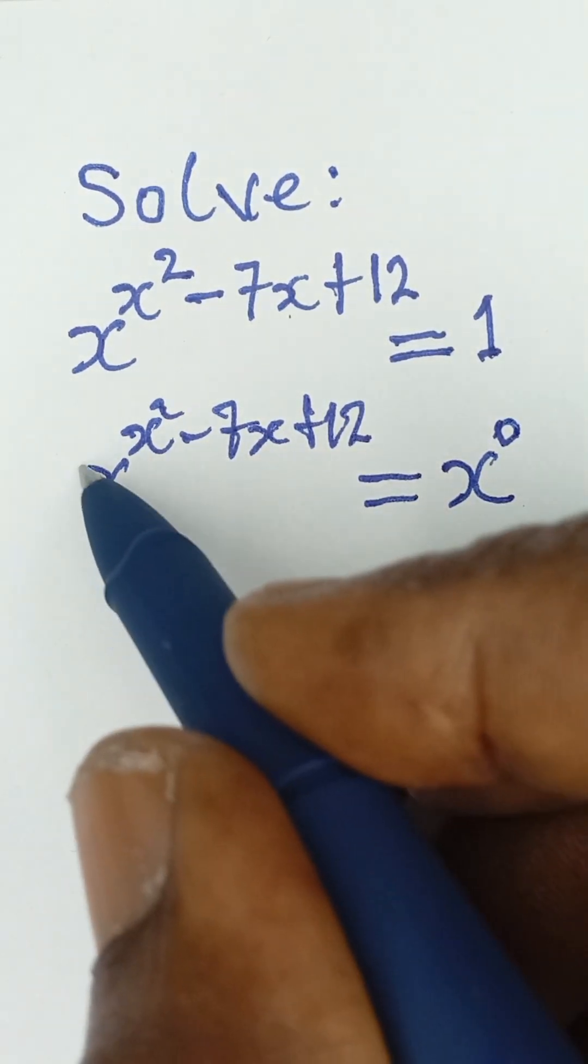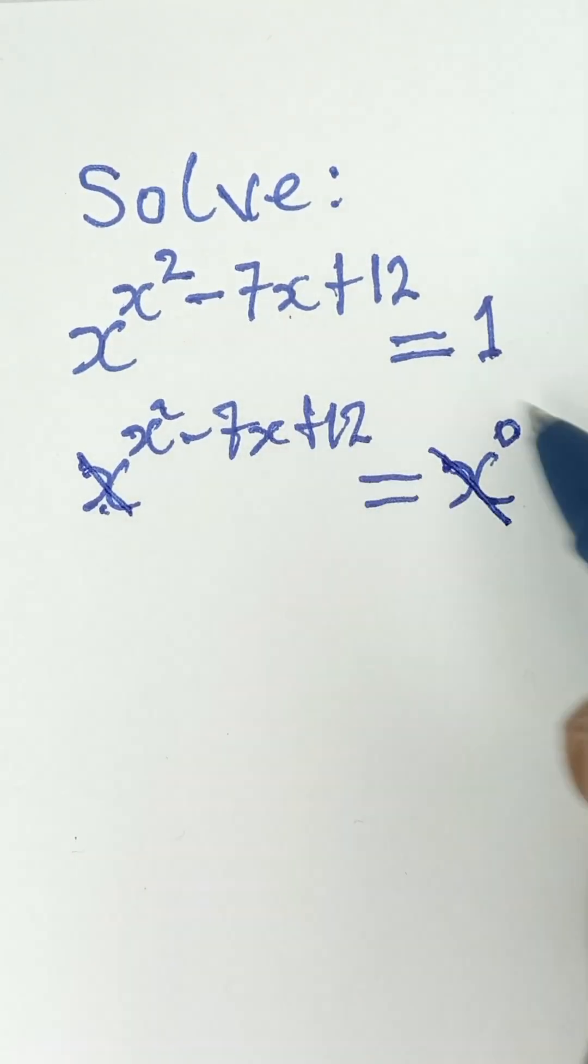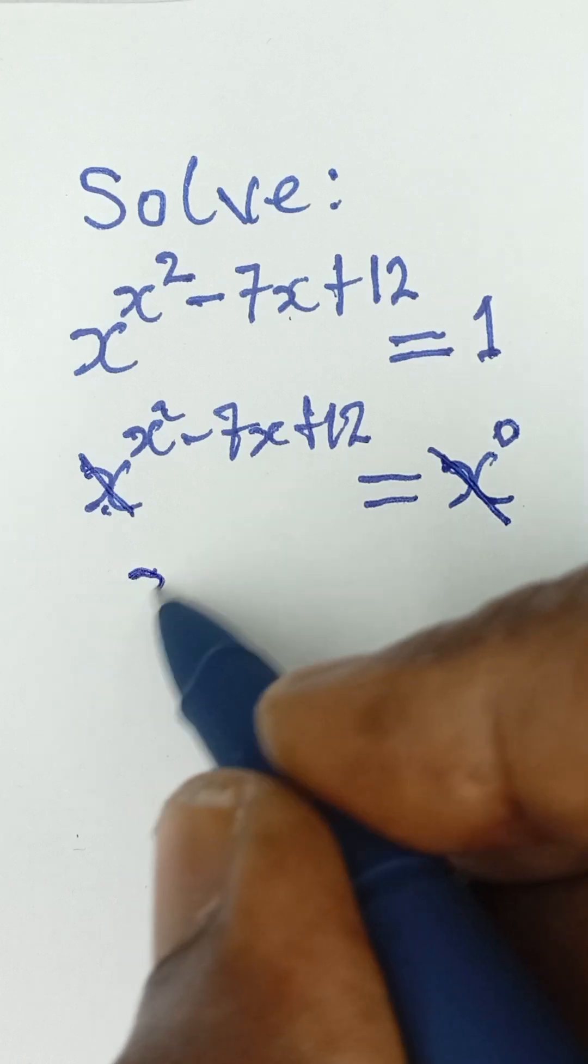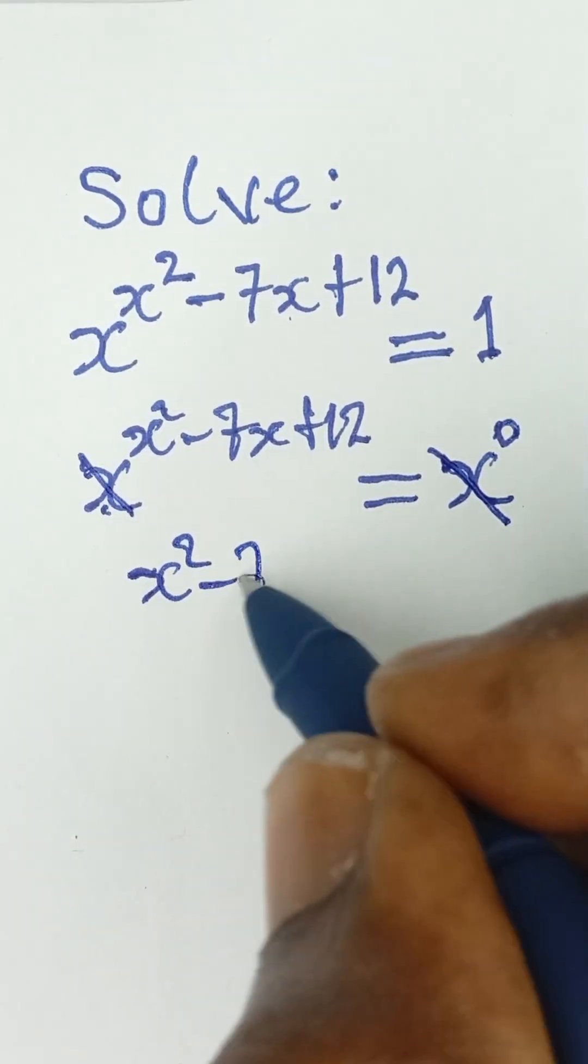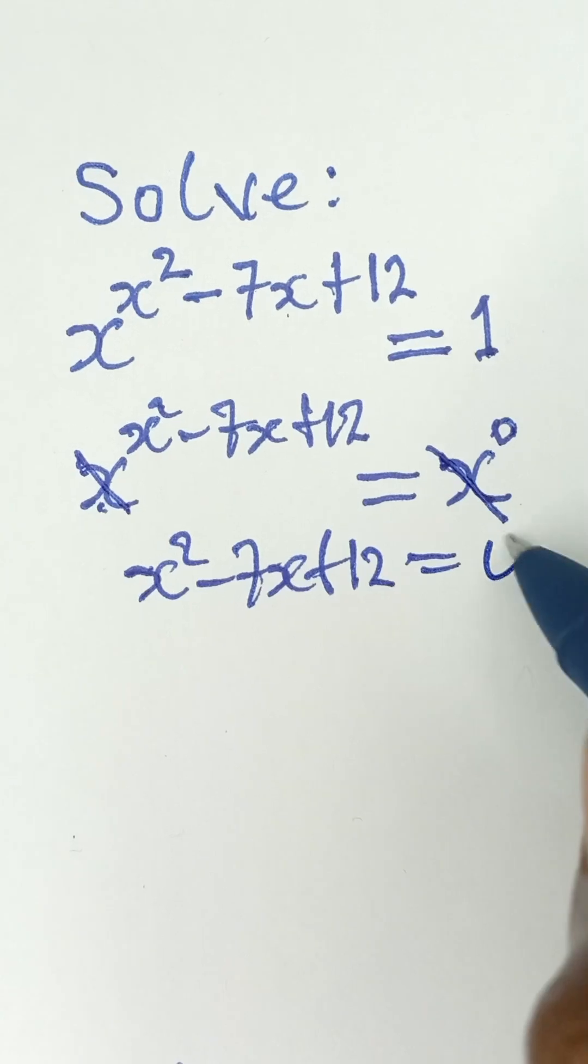So, now that the bases are equal, it means we can equate the powers. It means that the powers are also equal. So, we can simply say x squared minus 7x plus 12 is equal to 0.